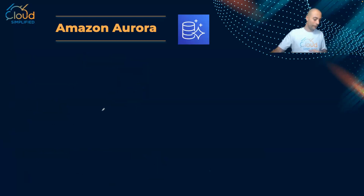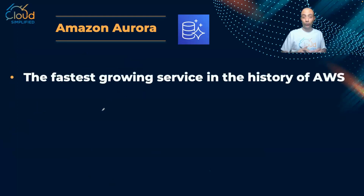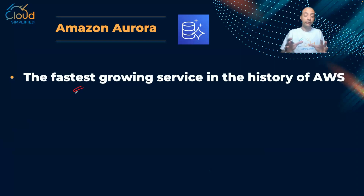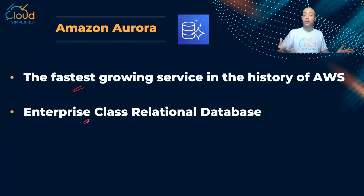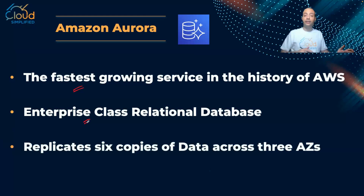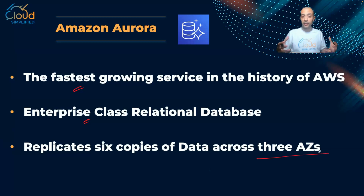Amazon Aurora is the fastest-growing service in the history of AWS, showing how organizations understand the benefit of Aurora RDS. It is an enterprise-class relational database offering enterprise-grade performance. From a durability perspective, Aurora replicates six copies of data across three availability zones — two copies per availability zone — and you can scale up to 15 read replicas across your region to offer the highest durability possible.